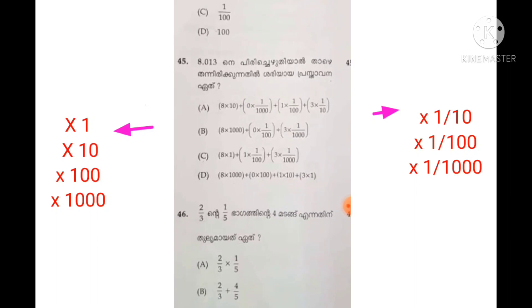We have to select the correct option. If we put the right option: 8 into 1, plus 0 into 1 by 10, plus 1 into 1 by 100, plus 3 into 1 by 1000. That confirms option C.